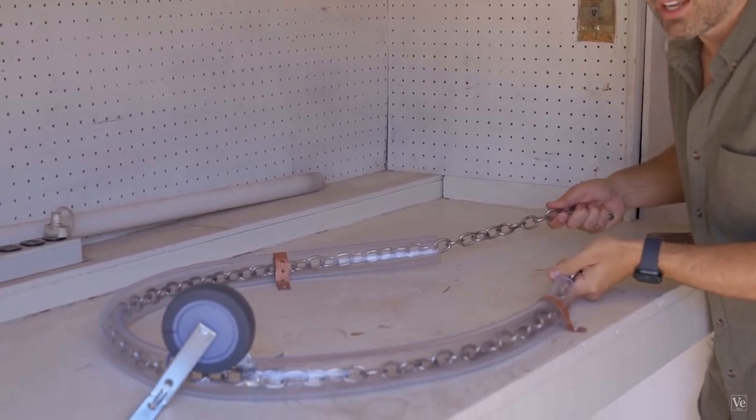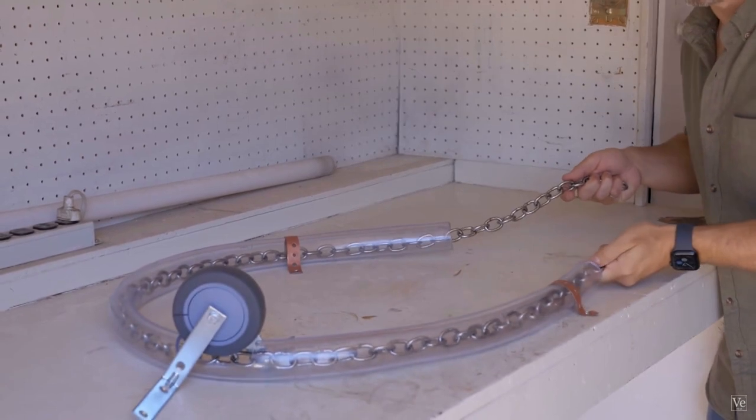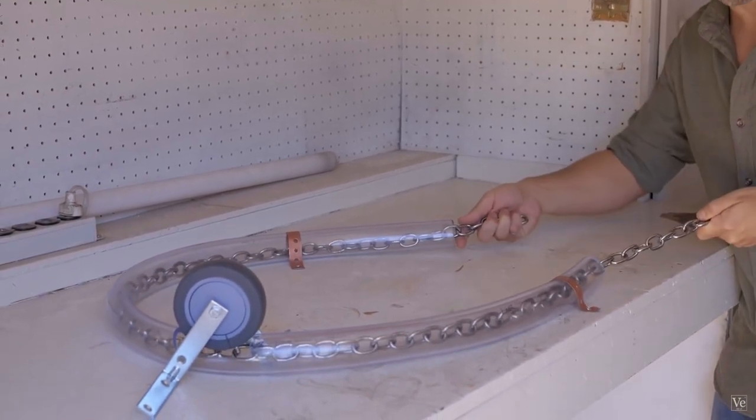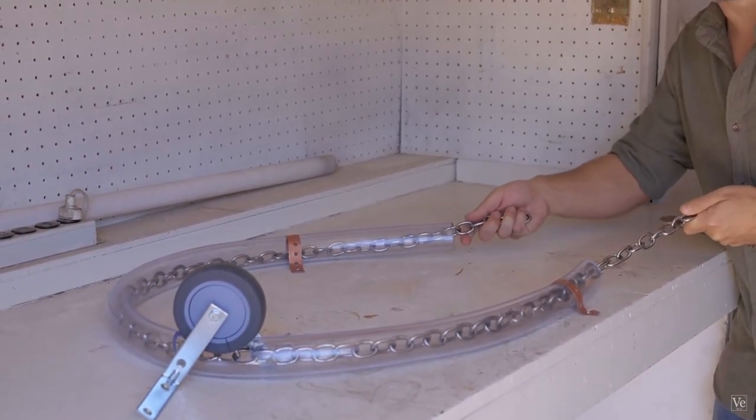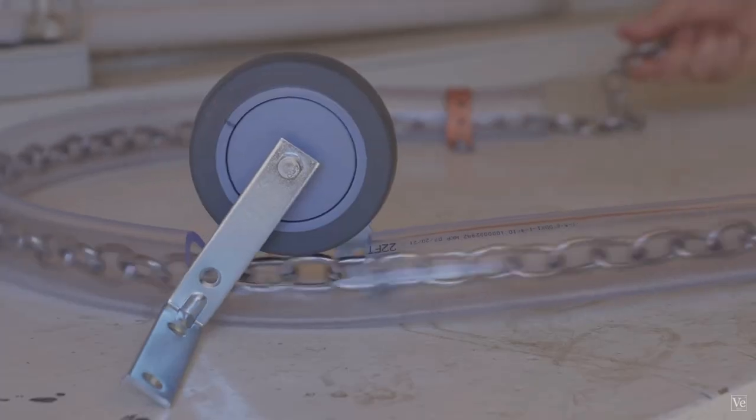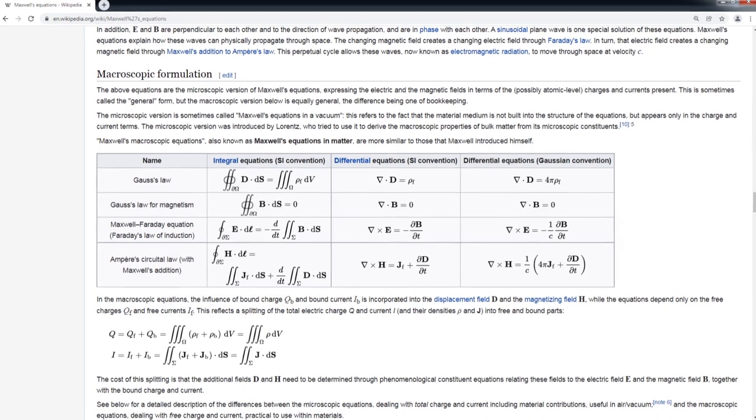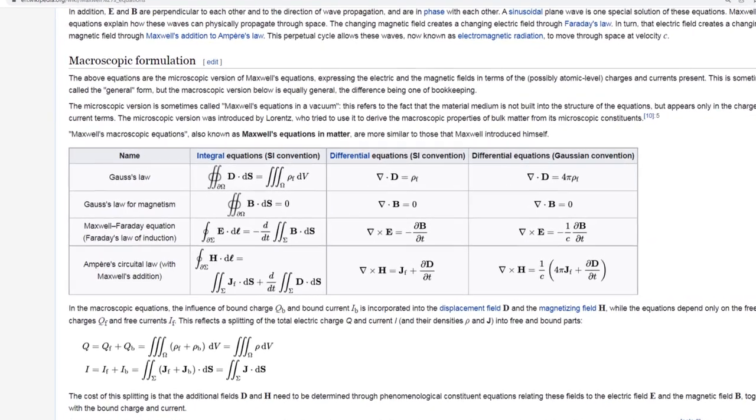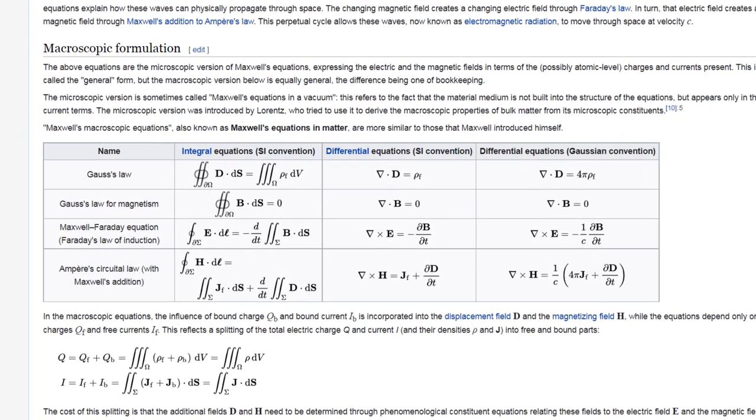After watching Veritasium's video a few times, the main misconception that he wanted to convey was that current did not flow like water in the rubber pipe. It could be induced by the EM wave as well. I totally agree, but I think that this concept should be credited to Maxwell's equations, not Poynting theorem.